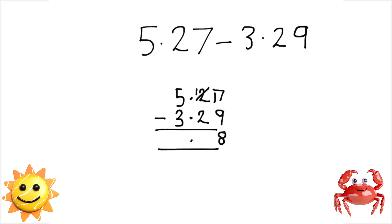Now we have 1 subtract 2. We can't do that. So we just go along to the next one again. Keep following the standard method. 11 subtract 2 gives us 9. And 4 subtract 3 gives us 1. So our answer is 1.98.